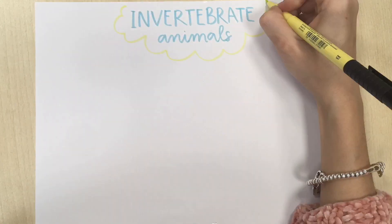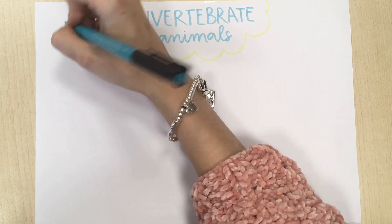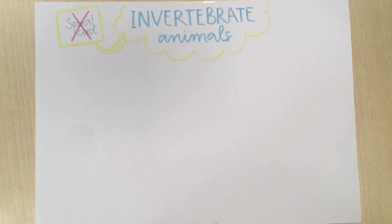In this video I will show you some things you should know about invertebrate animals. The main characteristic of invertebrate animals is that they don't have a spinal cord. They can be classified in six groups.